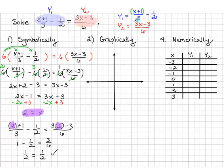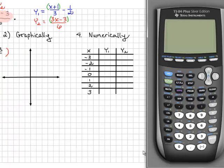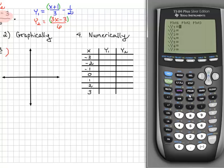To graph these, we'll use our calculator, making sure that we use parentheses around each numerator. After the calculator is turned on, go to y equals in the upper left hand corner and enter the first equation for y1. Remember to put the x plus 1 in parentheses so that we divide 3 into the whole numerator and not just the 1.